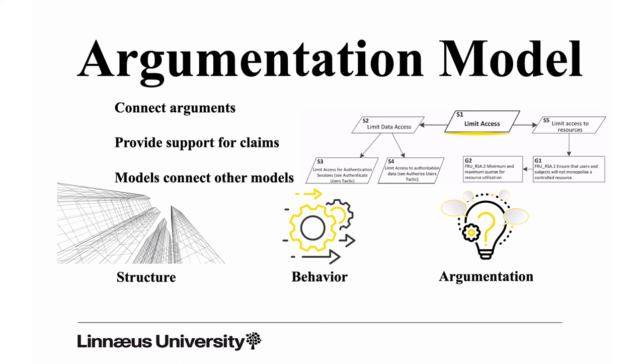A goal is fairly similar to a requirement. We have a goal to ensure that users and subjects will not monopolize a controlled resource. That means that we should have some mechanism in our system that prohibits users from getting access to a resource and then keeping that access forever and never releasing it. That goal can be partially reached by the second goal, which is to introduce minimum and maximum quotas to improve resource utilization. So we can build these argumentation structures.